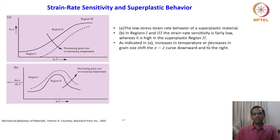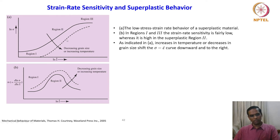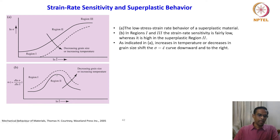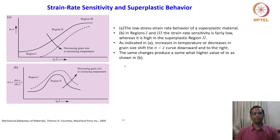Increases in temperature or decreases in grain size shift the sigma versus epsilon dot curve downward and to the right. As grain size increases, there is an increase in the strain rate sensitivity index. The same changes produce a somewhat higher value of m. This is the general behavior of superplasticity and its response to m.